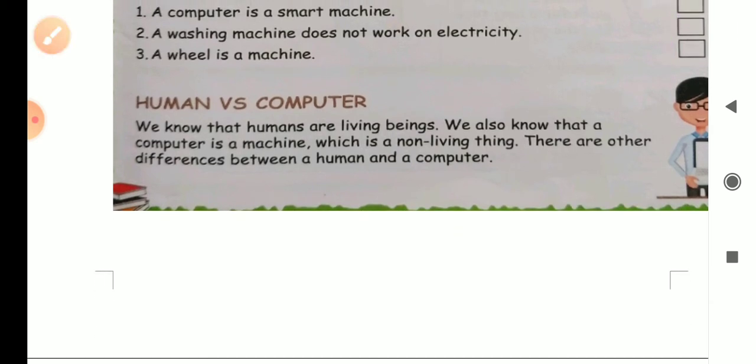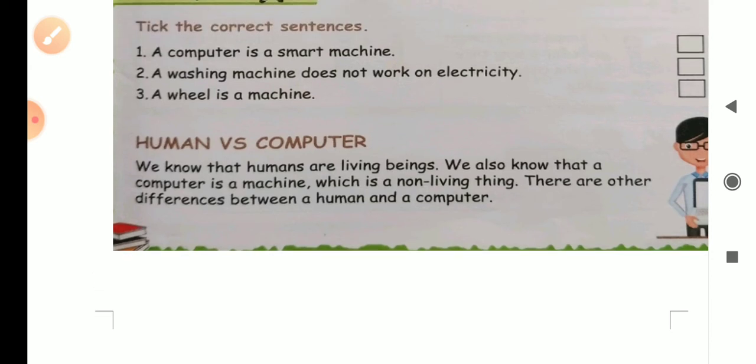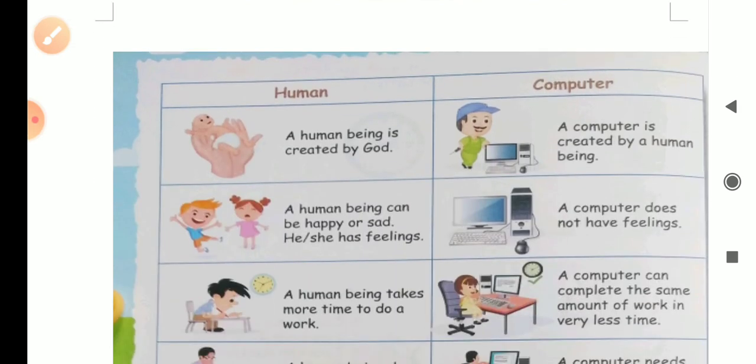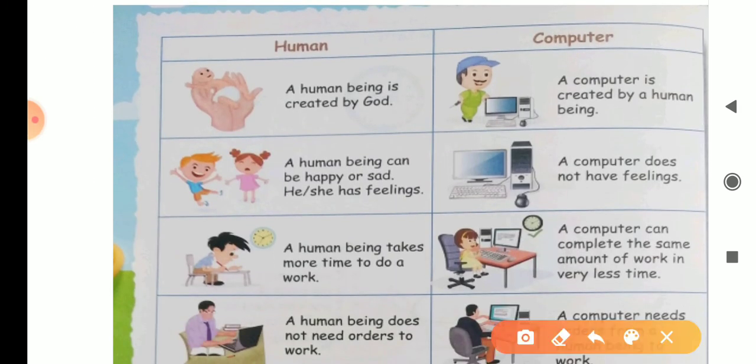Let's read some more. Human versus computer. We know that human are living beings. We also know that a computer is a machine which is a non-living thing. But with this, we also know that a computer is a machine that doesn't have life and it's a non-living thing. There are other differences between a human and a machine.